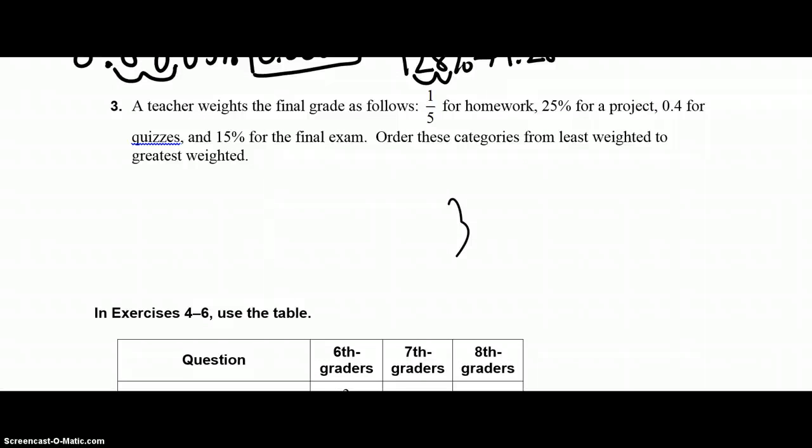Number three, it says a teacher weighs the final grades as follows: one-fifth is homework, 25% projects, 0.4 for quizzes, and 15% for the final exam. You need to order these categories from least weighted to greatest weighted. The best way to do this is to change them all to one type. I'm going to choose percents since I already have two percents. So one-fifth, you take one divided by five, you get 0.2, and then to change that to a percent, you swoop twice, and that's 20%.